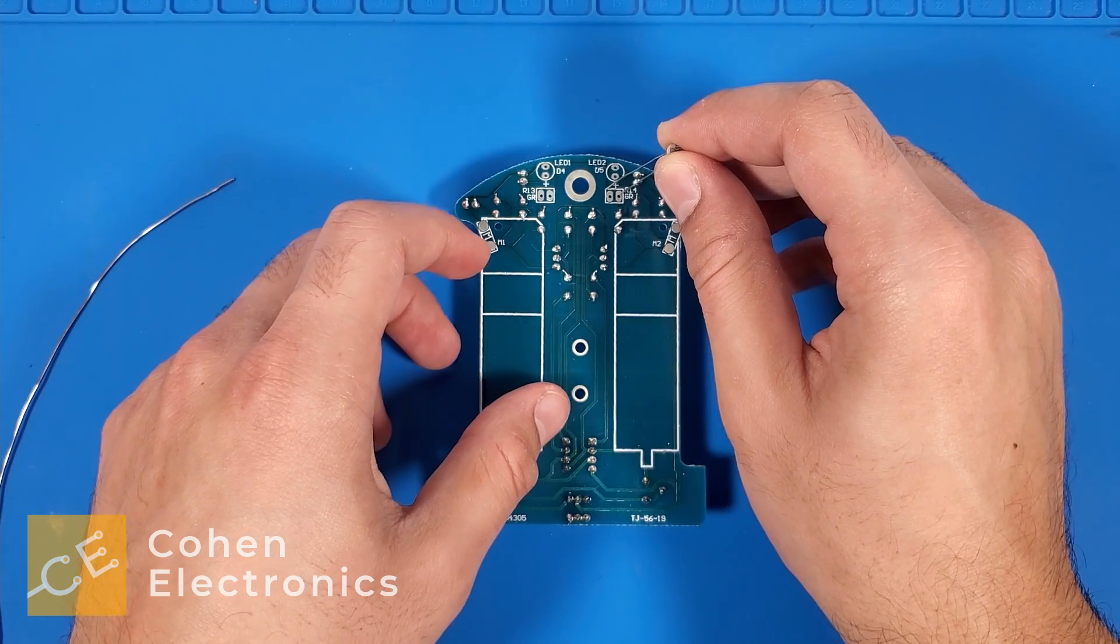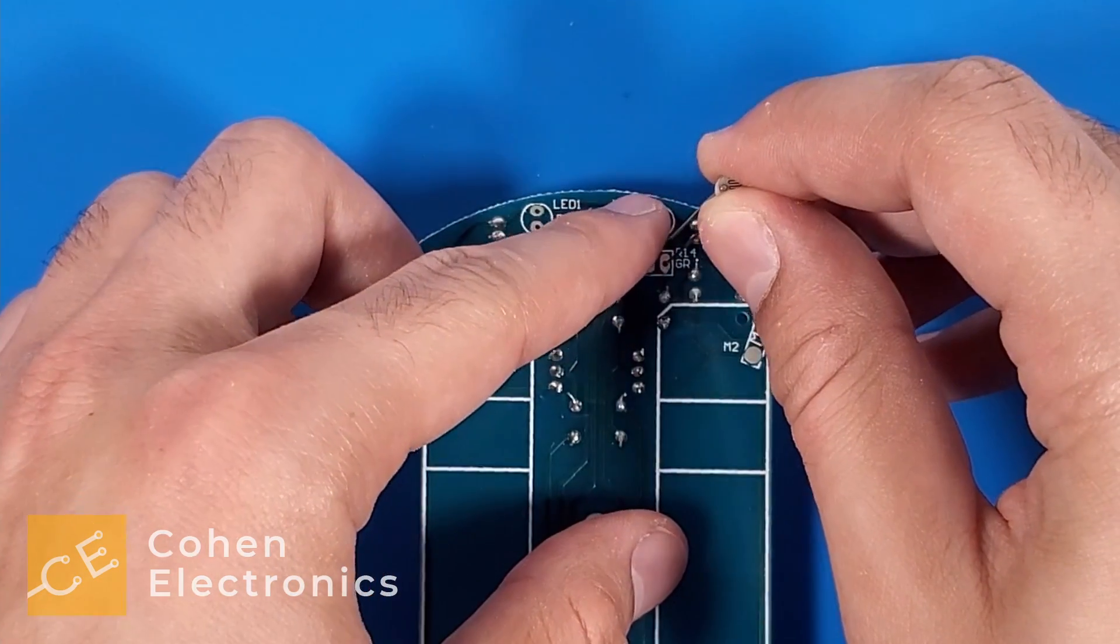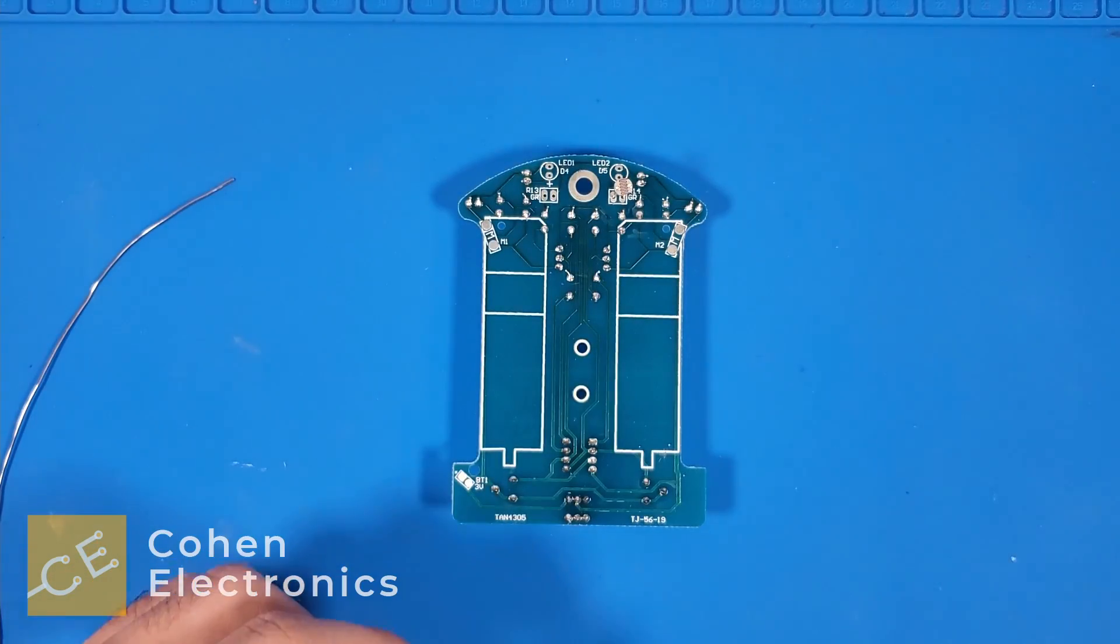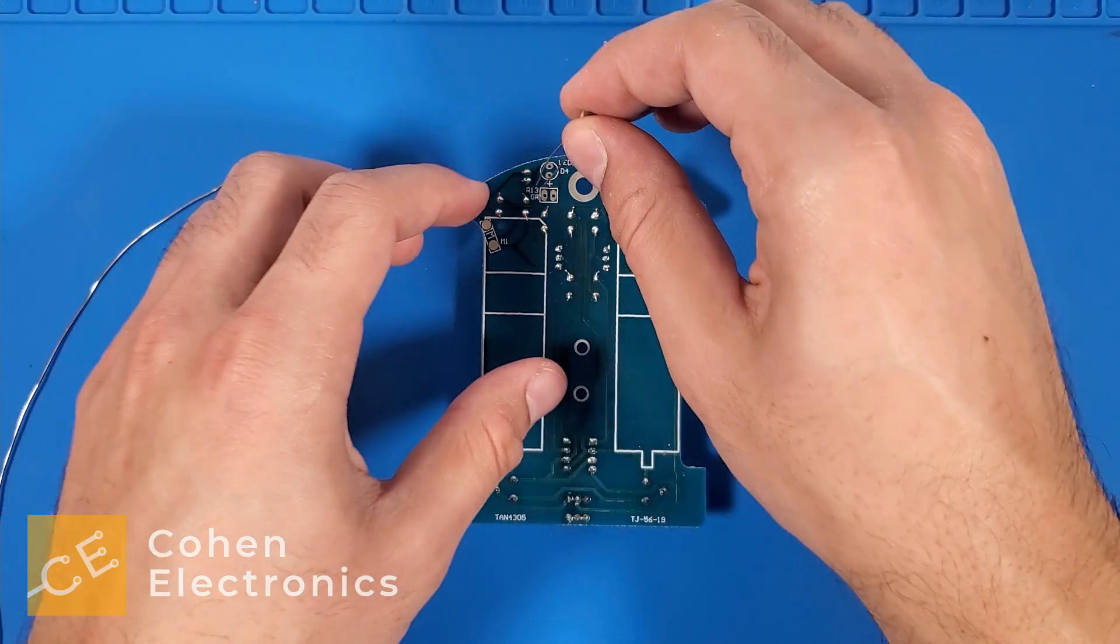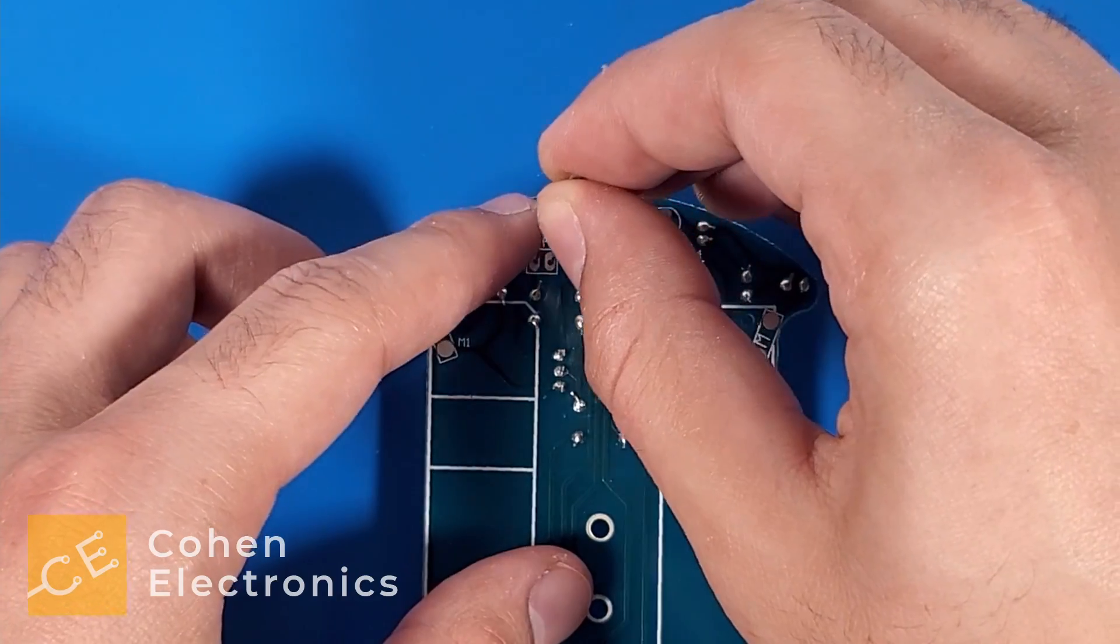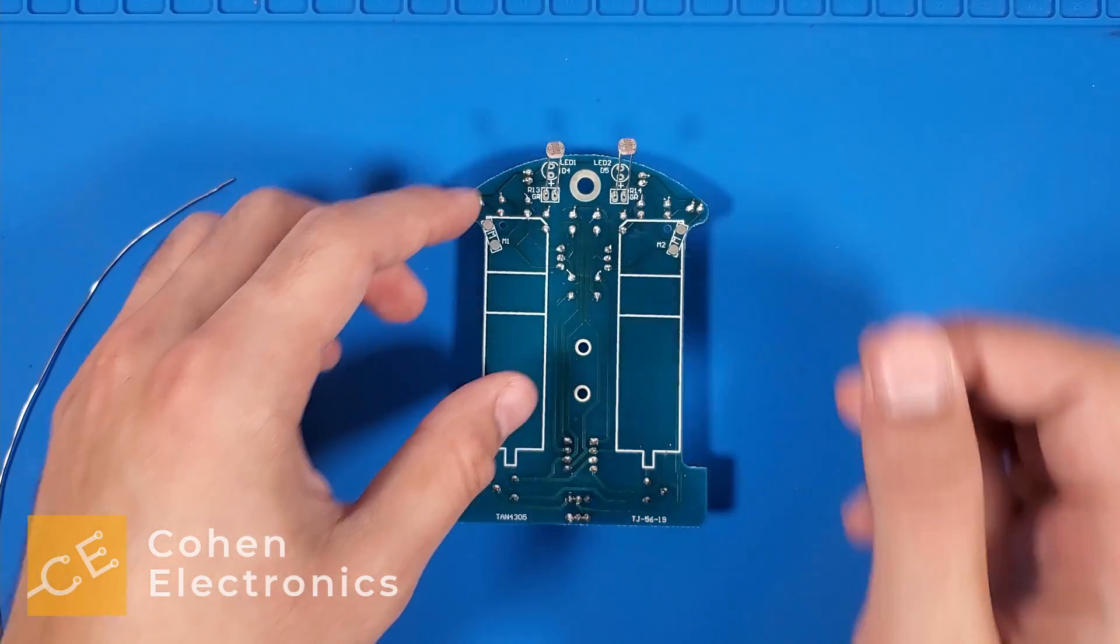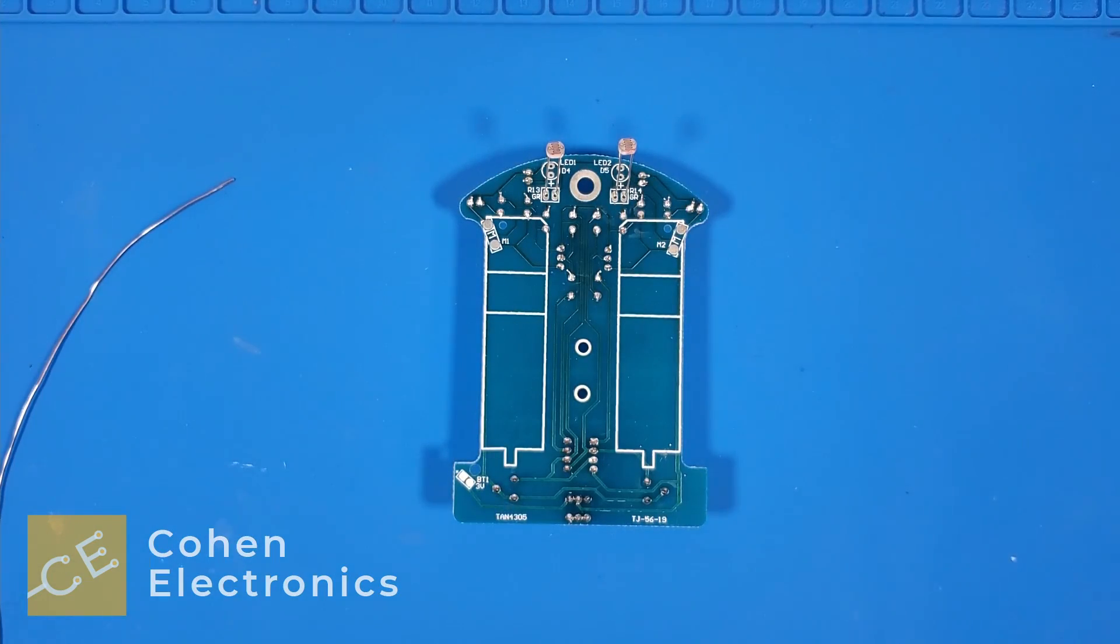Now let's insert the photoresistors. While keeping the robot body bottom side up, insert the photoresistors until the legs sit on the flat surface. Slightly bend the resistors upward and apply solder to the pads of both of them.